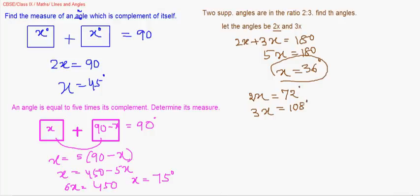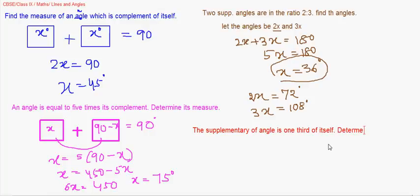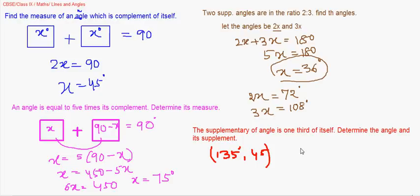I'll leave one more question for you to solve: an angle is one-third of its supplement — determine the angle and its supplement. The answers are 45 and 135 degrees. Check that their sum equals 180. We continue in the next session with the theorems. Thank you.